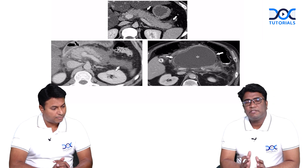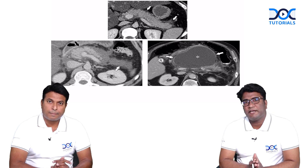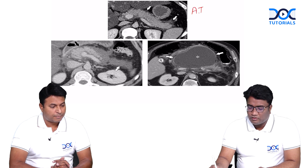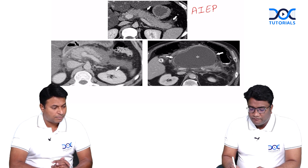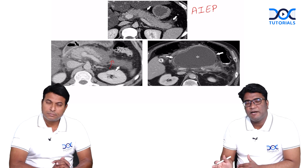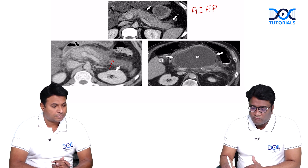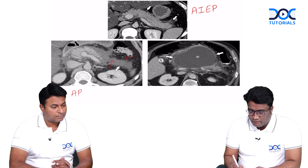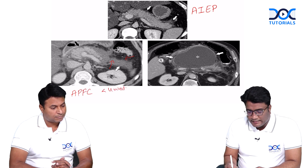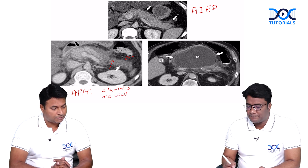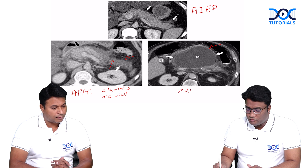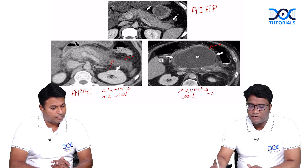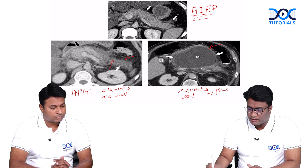There are two categorizations of pancreatitis on radiology. One is acute interstitial edematous pancreatitis (AIEP), where we have homogeneous enhancement but the pancreas is slightly bulky. If collections are seen in AIEP less than four weeks without any wall around them, this is called acute peripancreatic fluid collections. The moment we see a well-defined wall around a homogeneous collection in the peripancreatic area developing after four weeks, that is your pseudocyst.